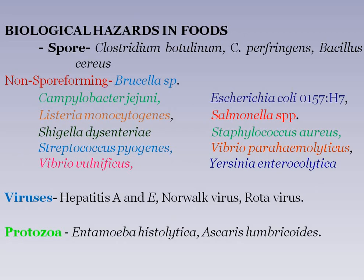Biological hazards include bacteria, viruses, protozoa, and fungi. Bacterial hazards include spore-forming bacteria and non-spore-forming bacteria. Spore-forming bacteria include Clostridium botulinum, Clostridium perfringens, and Bacillus cereus, which can produce spores at high temperatures.